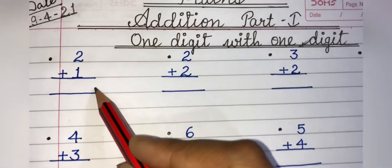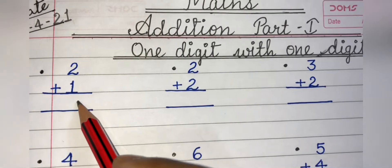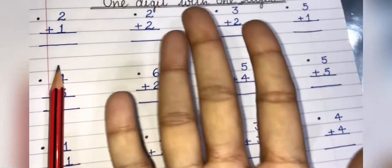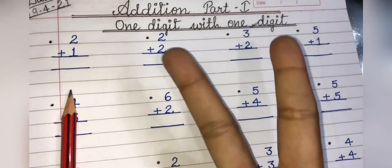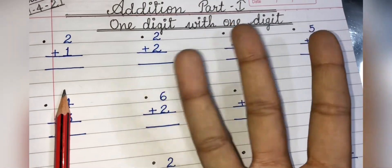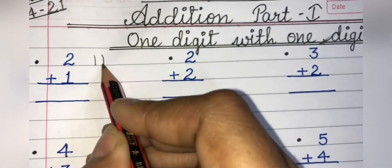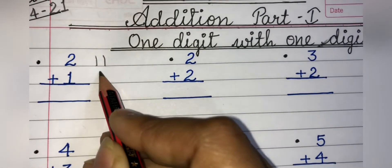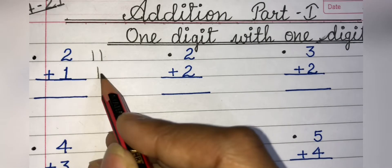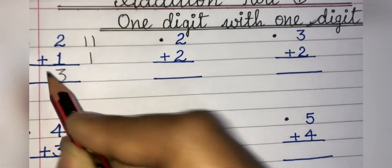So our first question here is 2 plus 1. You can add on your fingers with the help of your fingers like 2 finger plus 1 finger will be 3. Or you can do one thing. You can draw lines, 2 lines, then 1 line, 2 plus 1, 1, 2, 3. We will write 3 here.